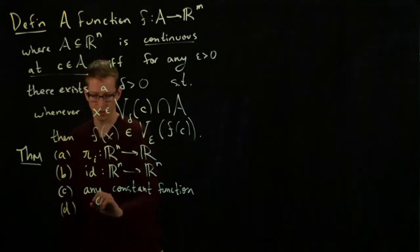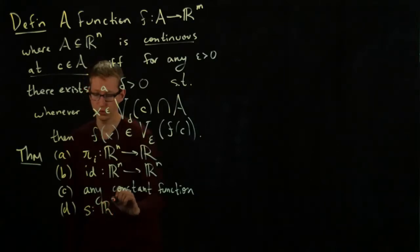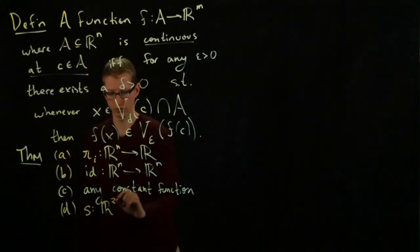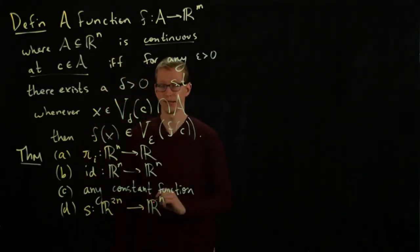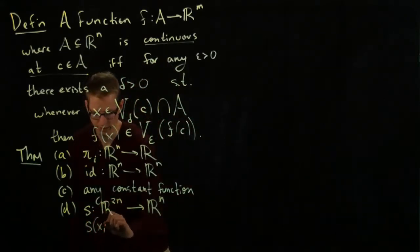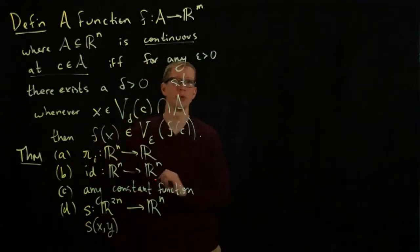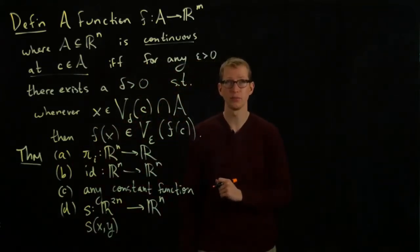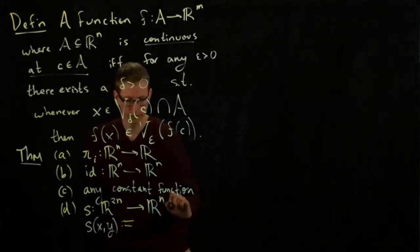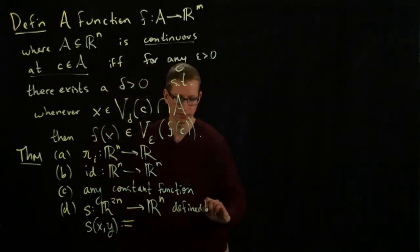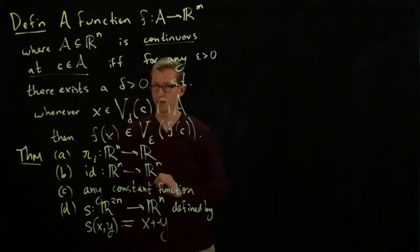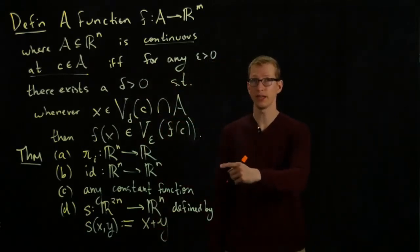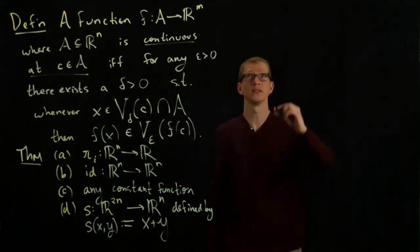And (d) the very specific function S from R^2n to R^n given by S of (x, y), where x and y are both elements of R^n, so these are n component vectors, defined by x plus y.